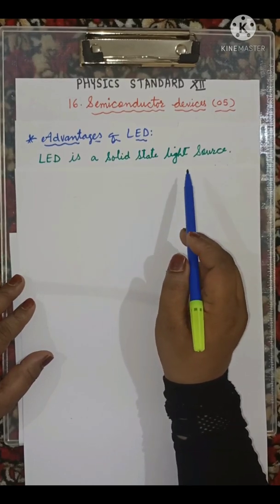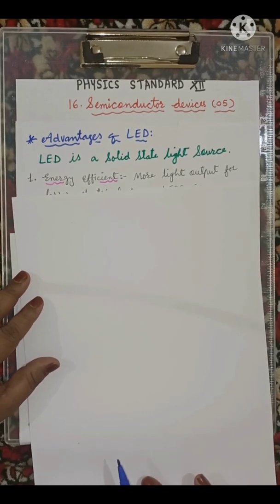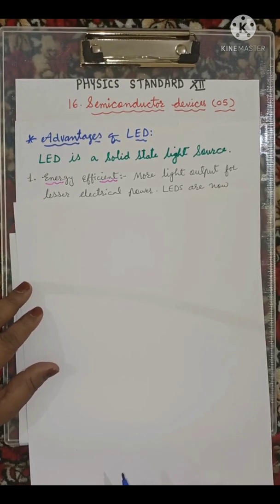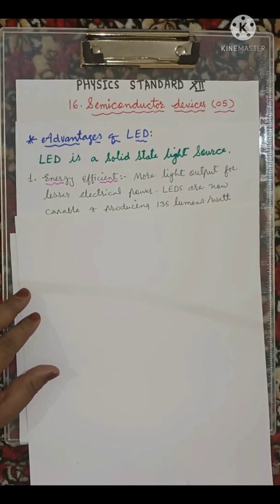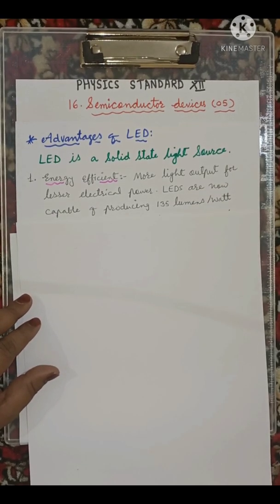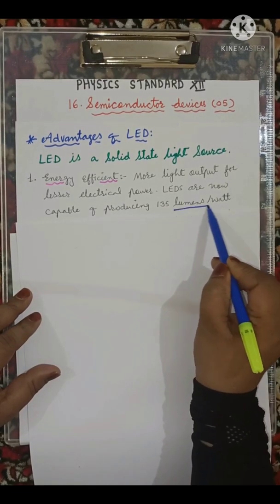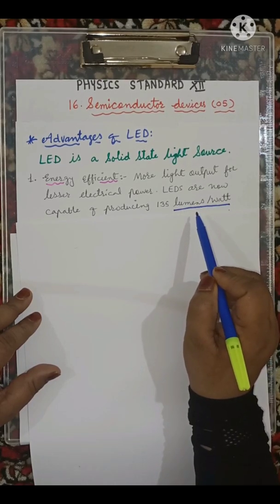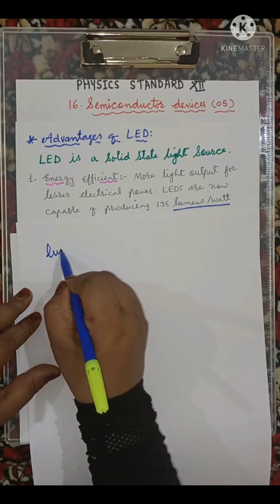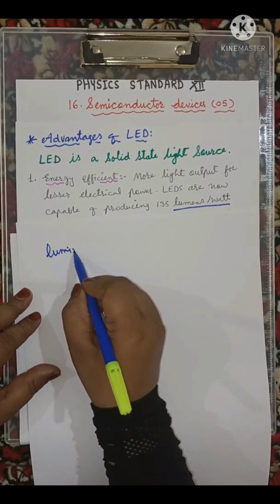The first advantage: energy efficient. More light output for lesser electrical power. LEDs are now capable of producing 135 lumens per watt. Lumens per watt is a unit of luminous efficacy.